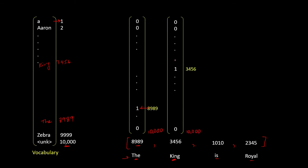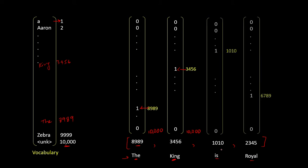All the values in this vector are 0 except the value at position 3,4,5,6. Similarly, the other words in the sentence will also be converted into a one-hot vector. This kind of representation is called one-hot encoding representation, and instead of text, we can use this as our input to the model.